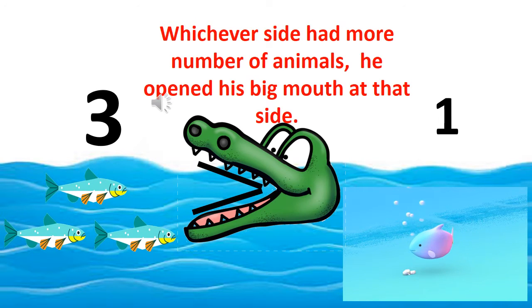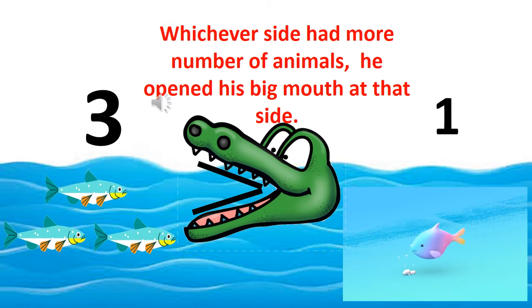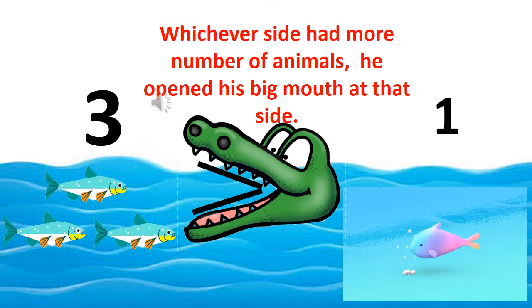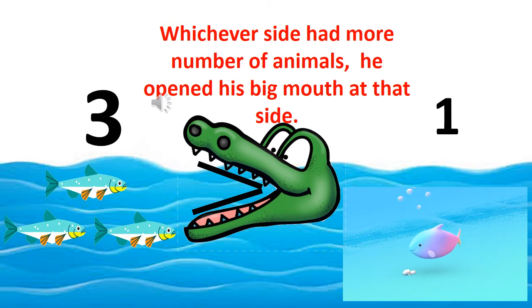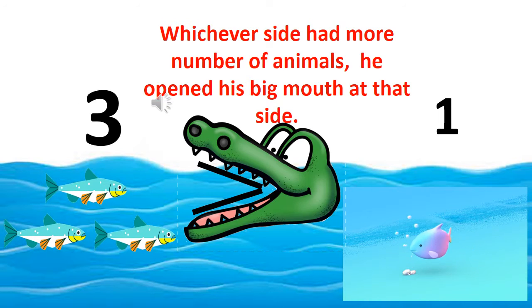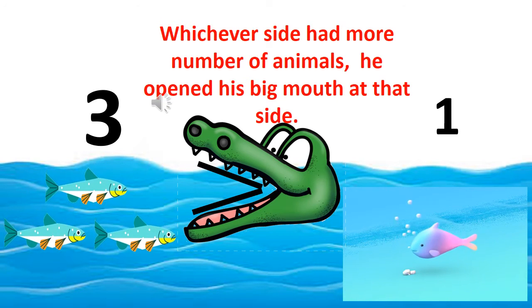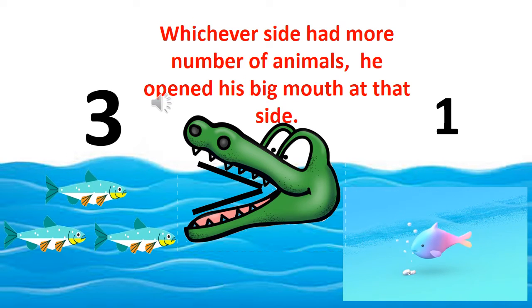On one side, there are three fishes and on the other side, there is only one fish. So, he will open his mouth towards three fishes because three is bigger than one.